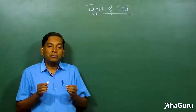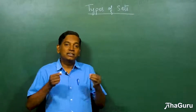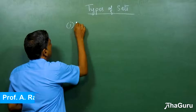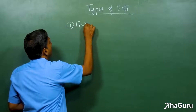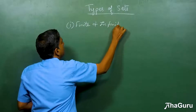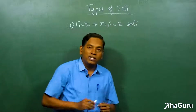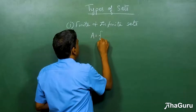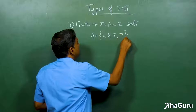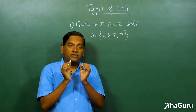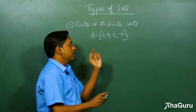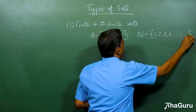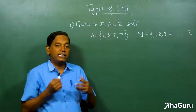We are going to learn about some special kinds of sets. The first category is finite and infinite sets, which we have already seen. For example, the set A = {2, 3, 5, 7} is a finite set — it has a finite number of elements. The set N = {1, 2, 3, 4, ...} is an infinite set.